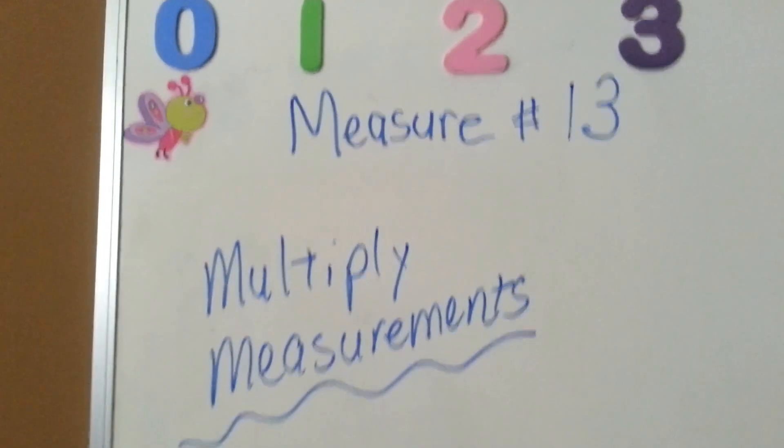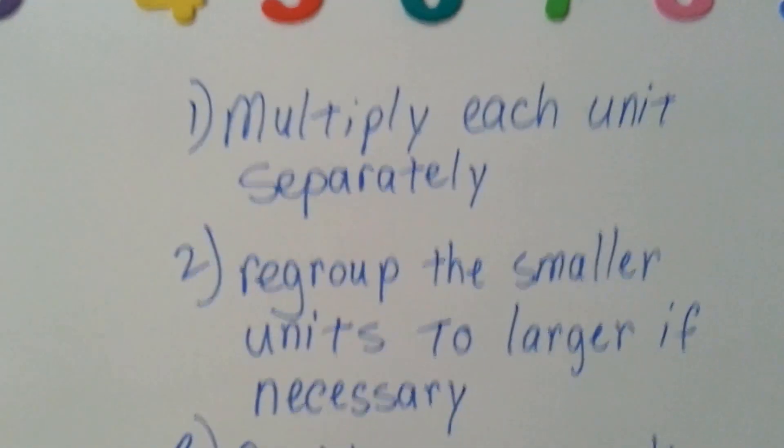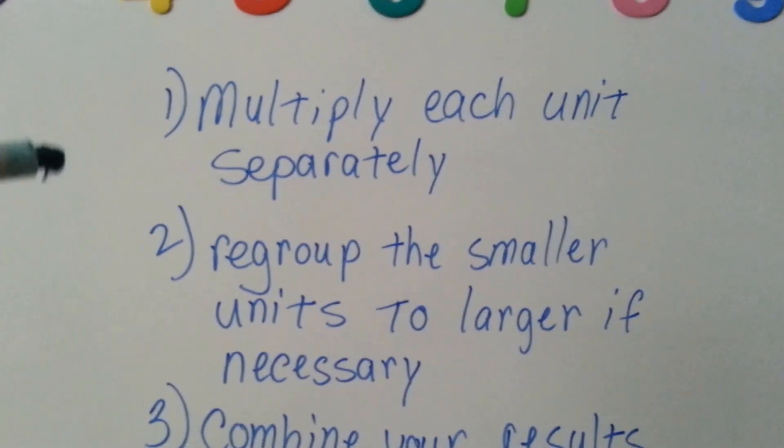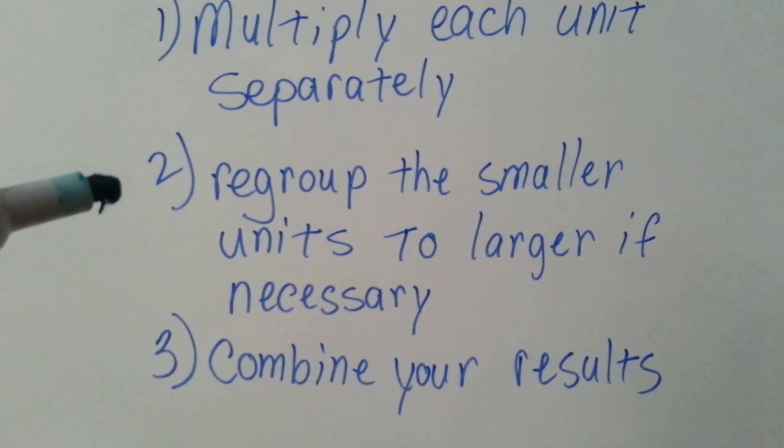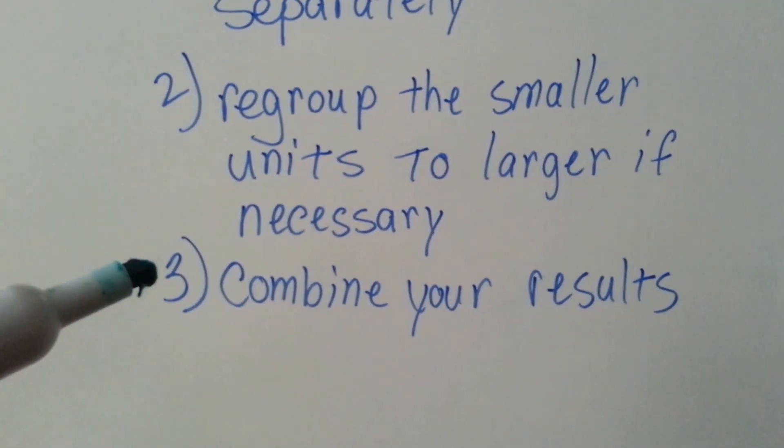Multiplying measurements. When we multiply measurements, we're going to multiply each unit separately, regroup the smaller units to larger ones if necessary, and then combine the results.